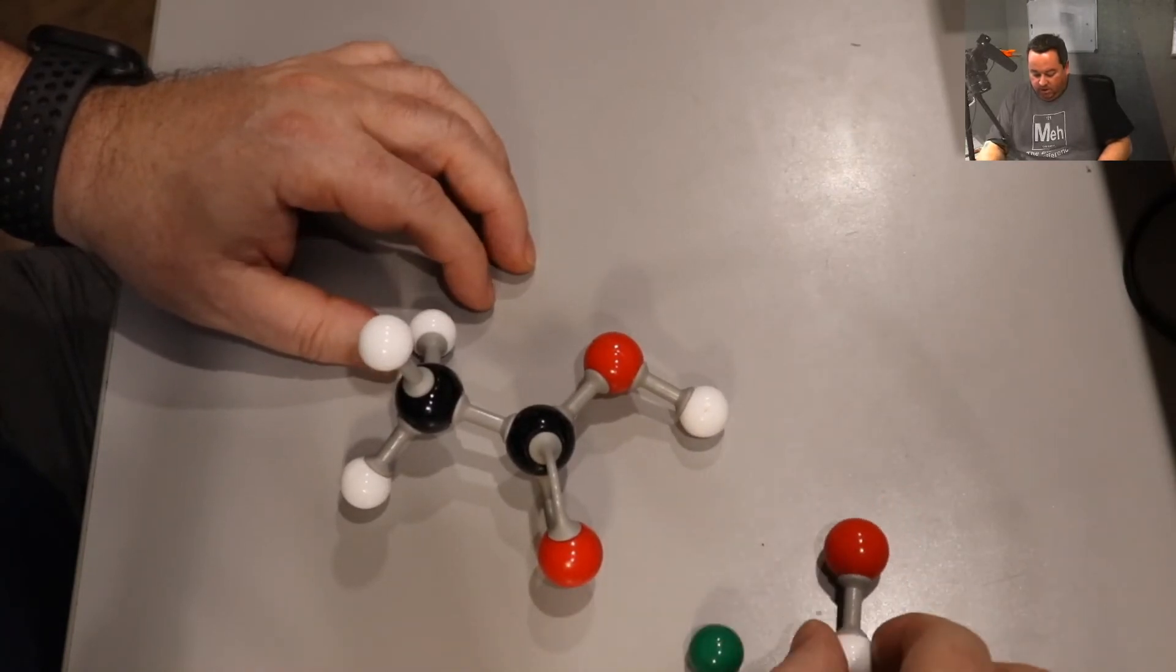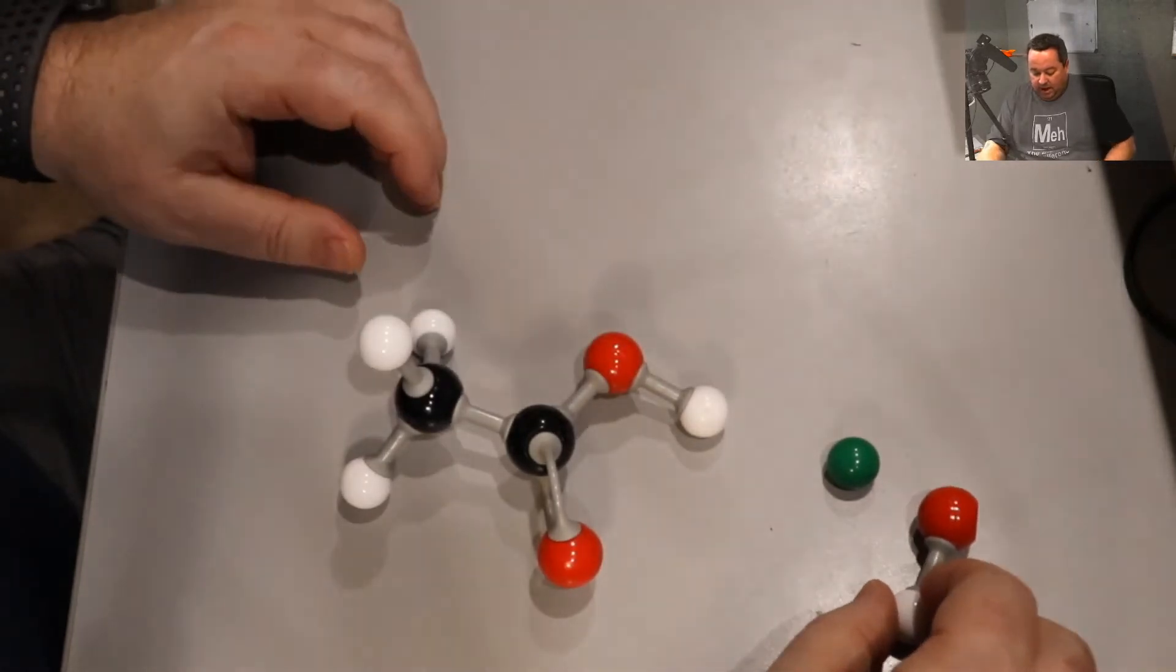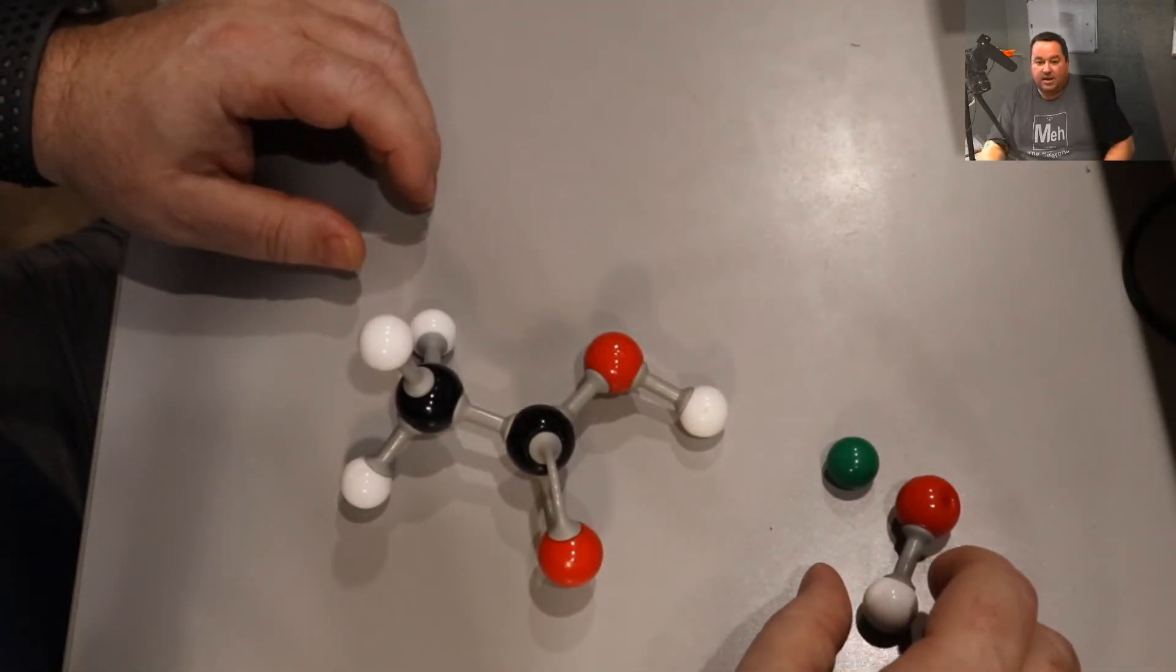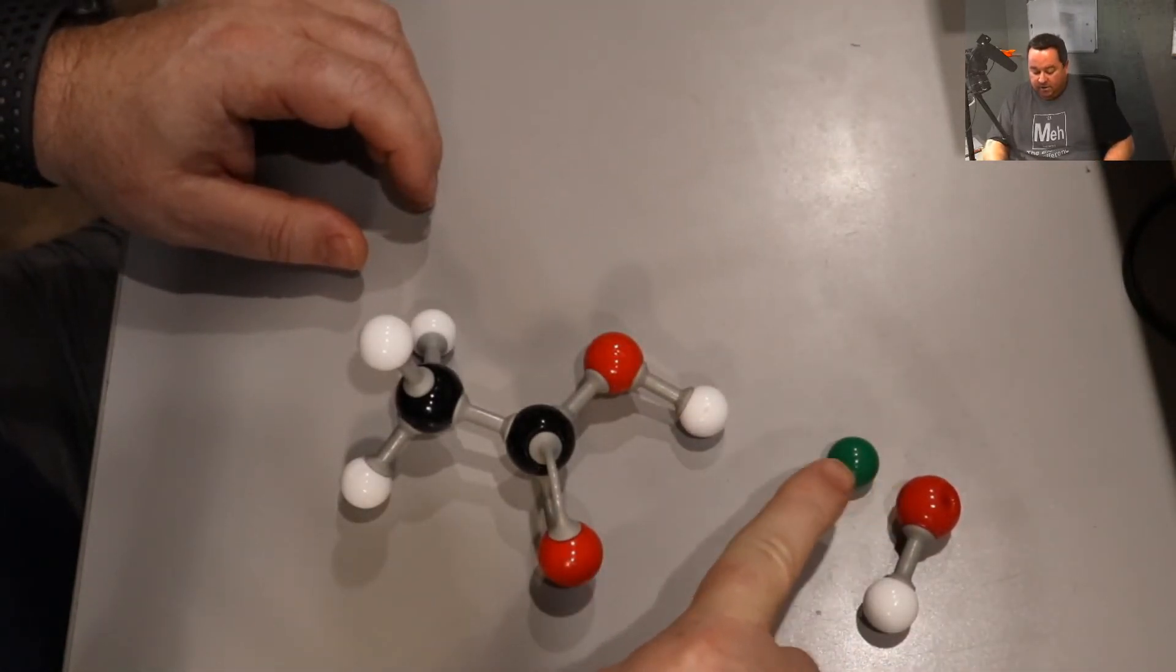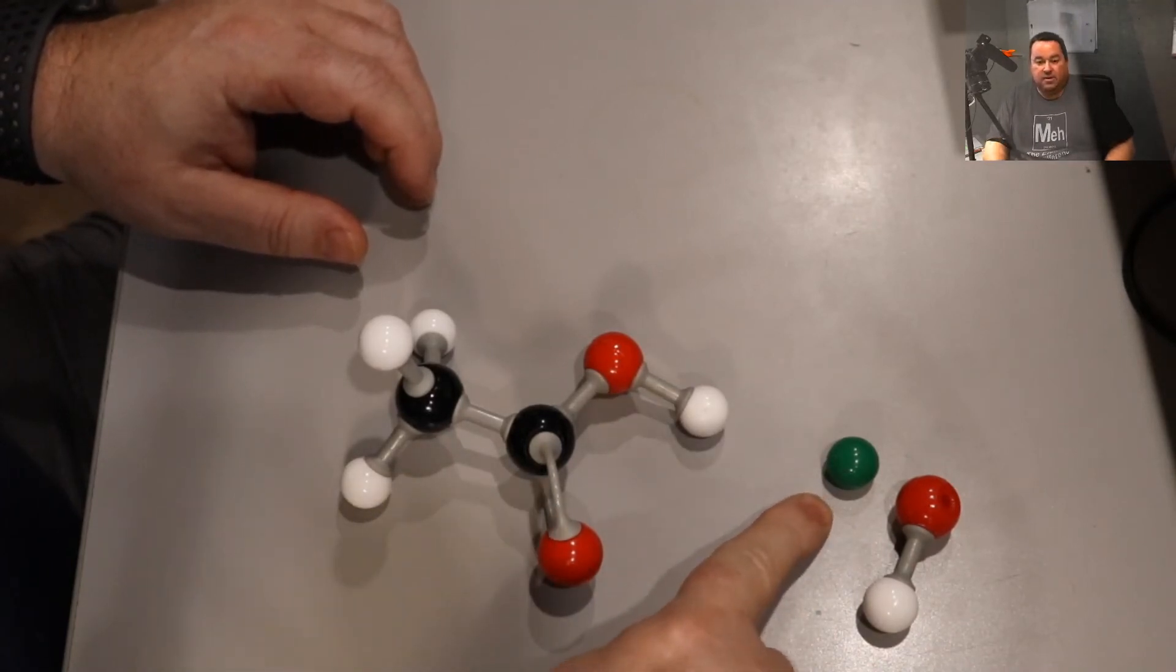So we'll use the green to represent the sodium, and sodium hydroxide as an ionic compound has a positive and a negative ion that attract each other. So we're not going to use a covalent bond to link them. We'll just remember that they're attracted by an ionic bond by the electrostatic force.